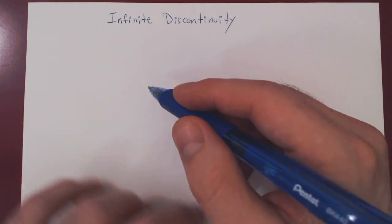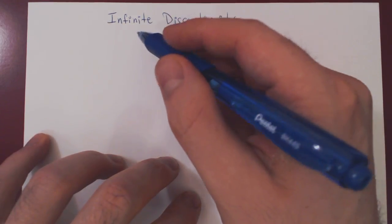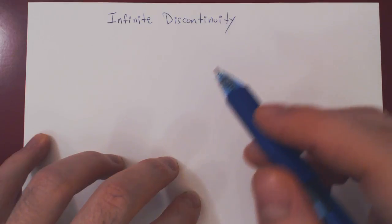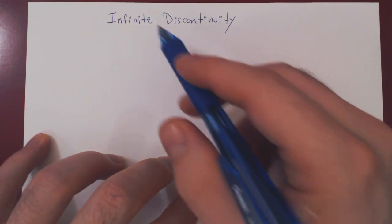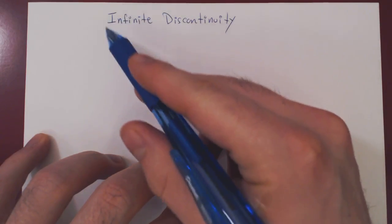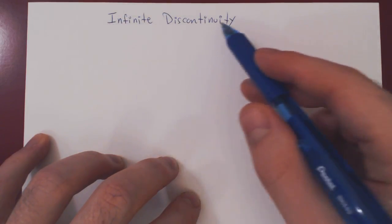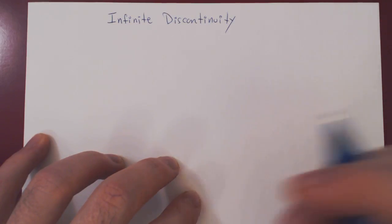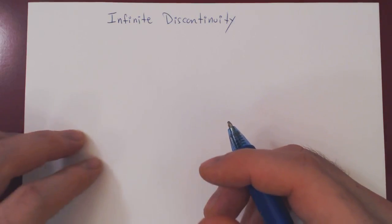In this video, we will consider our third and final type of discontinuities, namely an infinite discontinuity. We'll consider two examples, and it will be really clear what it takes to have an infinite discontinuity.